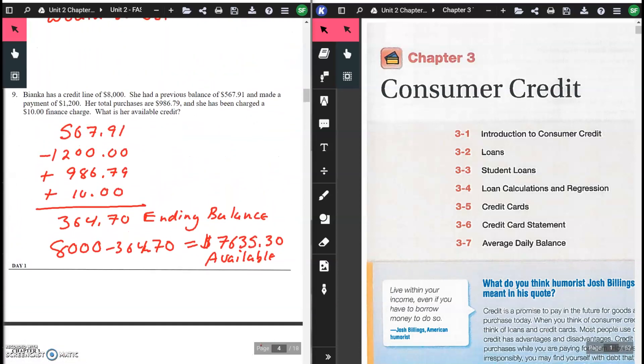Number nine, last one: Bianca has a credit line of $8,000. She had a previous balance of $567.91 and made a payment of $1,200. Her total purchases are $986.79, and she has been charged a $10 finance charge. What is her available credit?